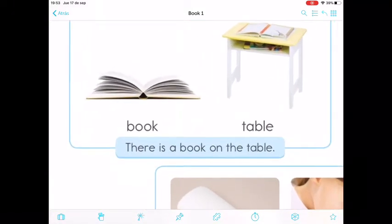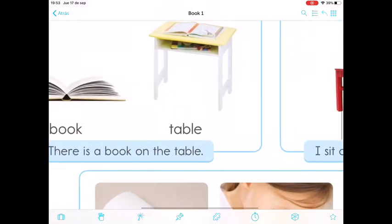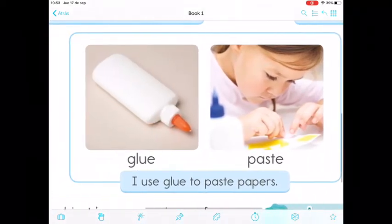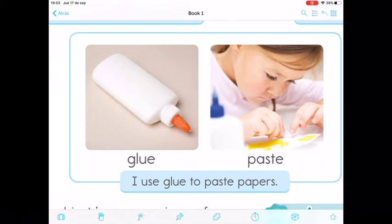Y en este caso, acuérdate que tenemos book, table, chair. Y aquí abajo tenemos glue. ¿Para qué me sirve el glue? To paste. Excellent. Now pay attention please and listen.